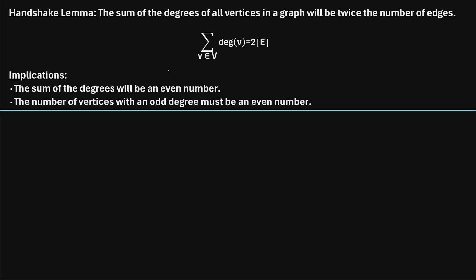There are two interesting implications of the handshake lemma. The first is that the sum of the degrees will be an even number. The second implication is that the number of vertices with an odd degree in a graph must be an even number. I'm going to show you three examples of different graphs and we'll see how the handshake lemma applies to each of them.